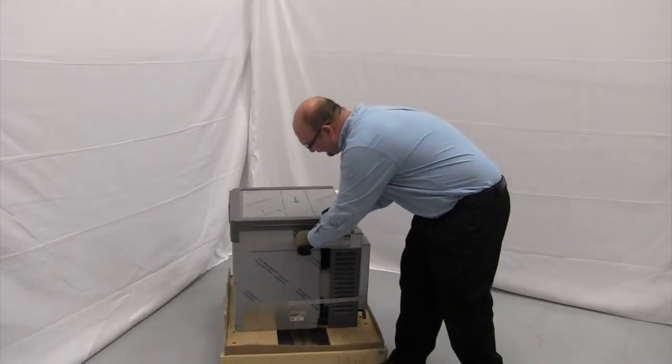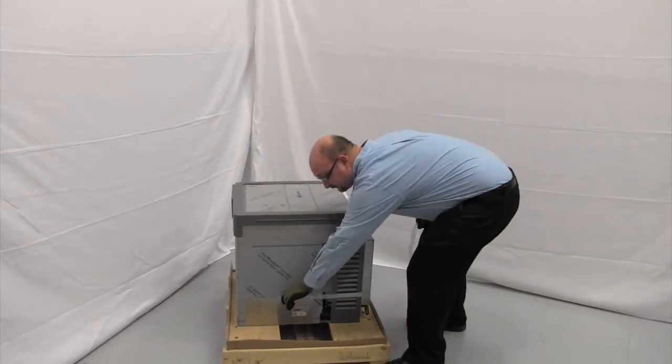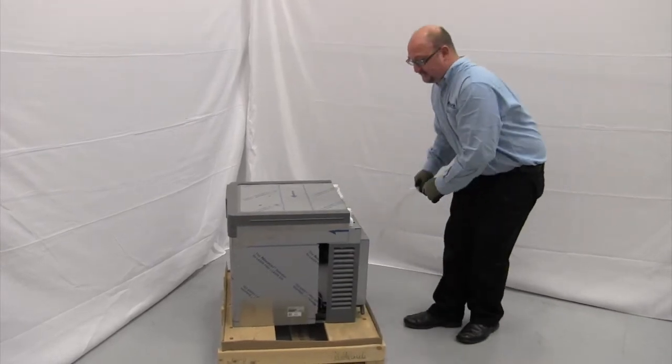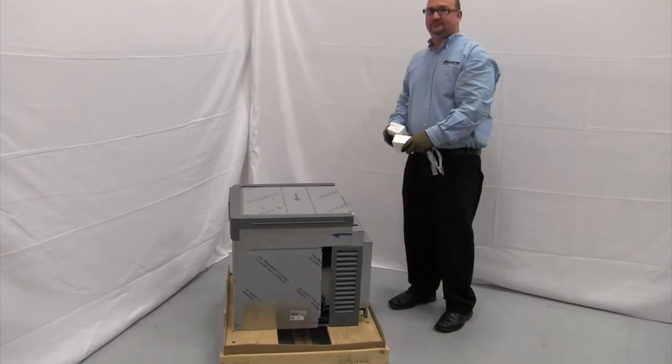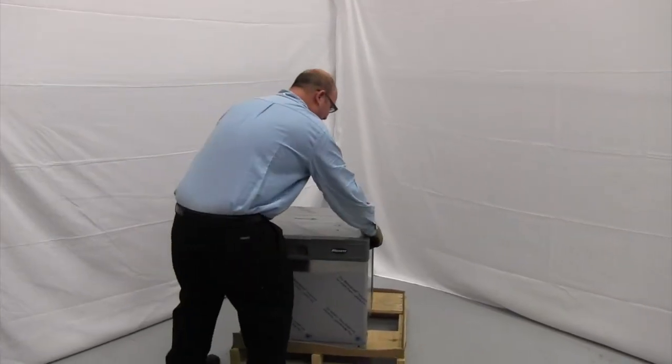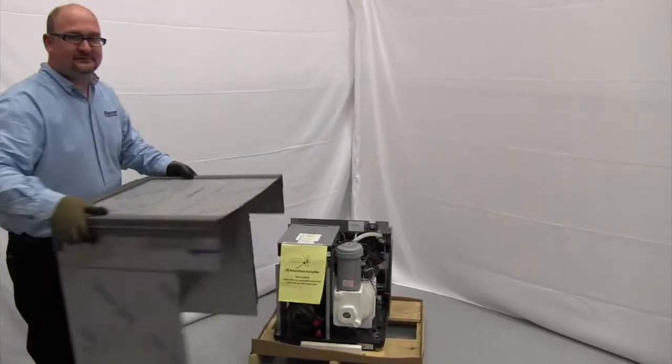Next we're going to remove the packing tape from both sides of the unit. In addition, there's also two styrofoam blocks that can be removed. Next we're going to remove the stainless steel cover from the unit and set it aside.